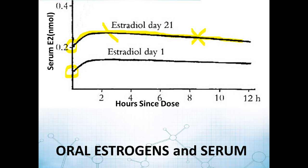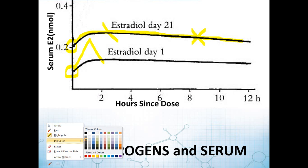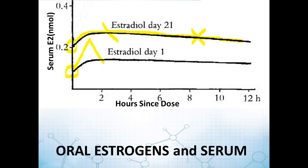If we juxtapose that with progesterone, the values went up and down very fast with other complications as well. If you come back in on day 21 with oral progesterone, your baseline likely has not changed — it's going to go up and down the same way. There's really nothing there to measure effectively in serum or in saliva. Using oral progesterone with serum or saliva testing is really problematic, and I encourage you to watch that video for more detail.